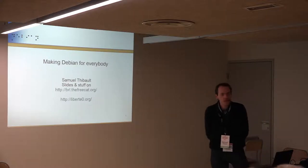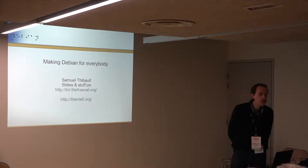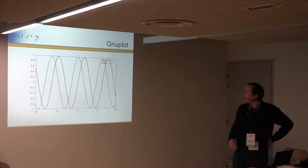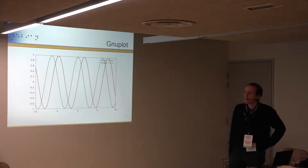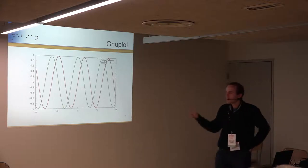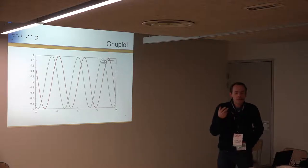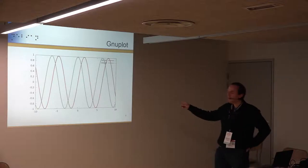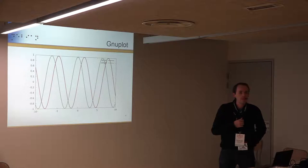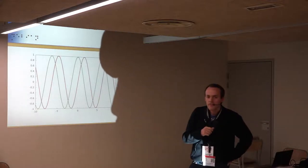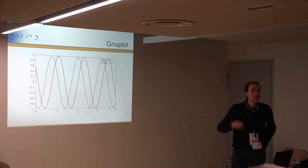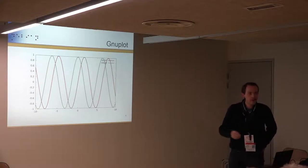Good afternoon everybody. I'll talk about accessibility — making Debian for everybody. I'll give my usual introduction, so if you've already seen one of my talks you can skip about 10 or 15 minutes. Can you tell me what the problem with this graph is for accessibility? Yes — for blind people and colorblind people. That's one of the problems with Gnuplot's default color choices.